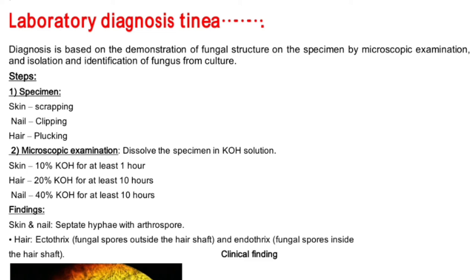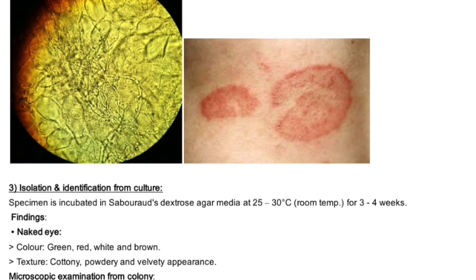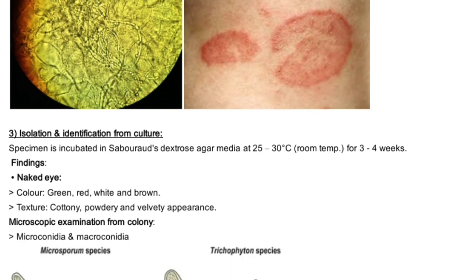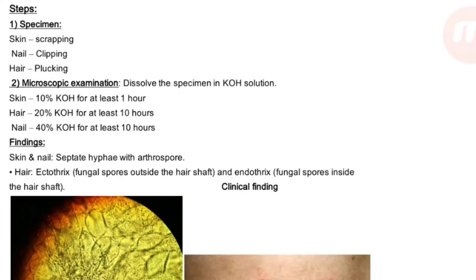Diagnosis is based on demonstration of fungal structure in specimen by microscopic examination and isolation and identification from culture. Specimen: skin scraping, nail clipping, hair plucking. The keratin in the nail is more than in the skin, so during microscopic examination, we dissolve the specimen in potassium hydroxide — 10% for skin, 20% for hair, and 40% for nail — for at least 10 hours.